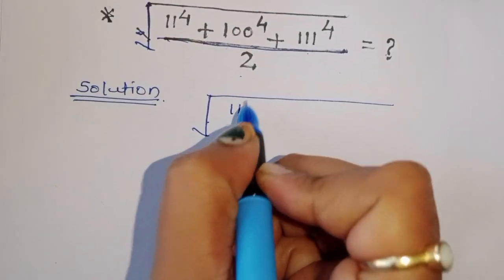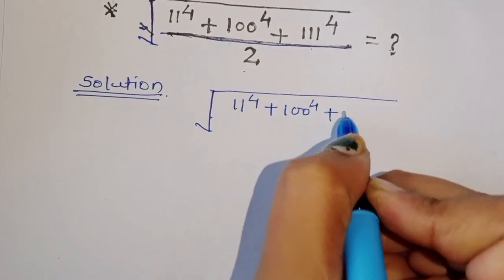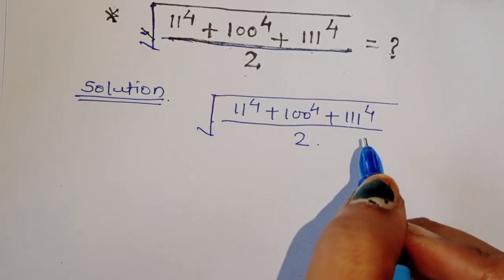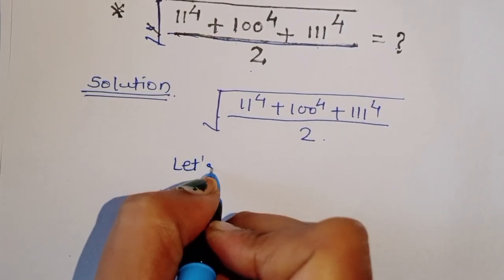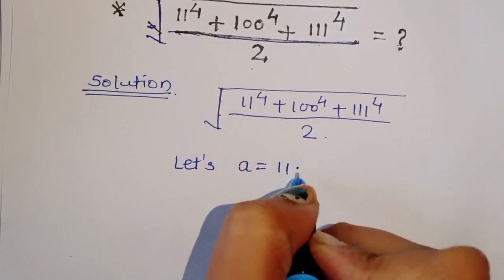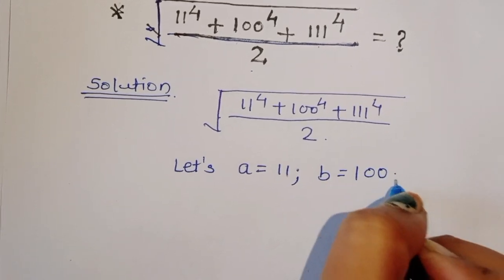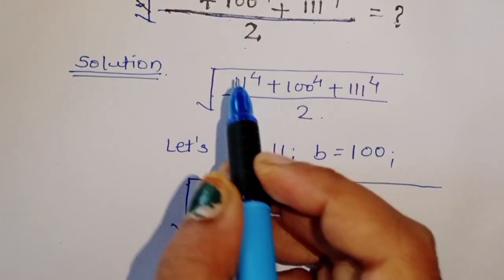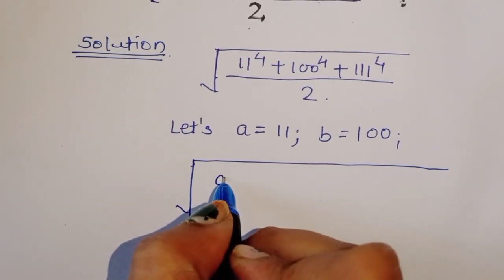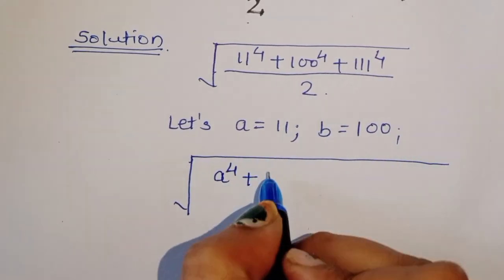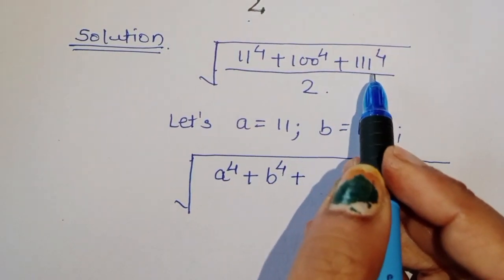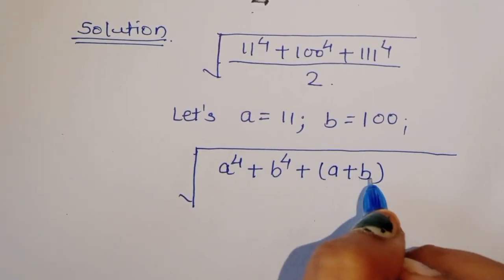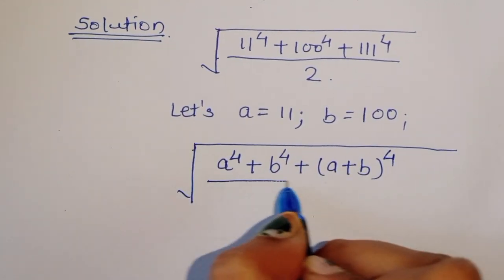What is given: 11 power 4 plus 100 power 4 plus 111 power 4, divided by 2. Now let's consider A is equal to 11 and B is equal to 100. So A power 4 plus B power 4, and 111 can be written as A plus B, so we have A plus B power 4 divided by 2.